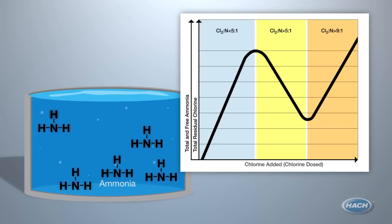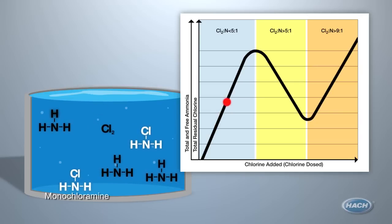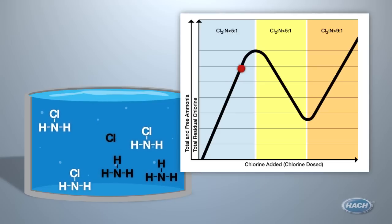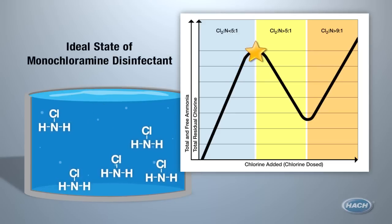You are trying to create monochloramine. The ammonia drops a hydrogen atom and the chlorine takes its place. When you have effectively bonded one chlorine molecule with each ammonia, you have achieved the ideal state of monochloramine disinfectant.